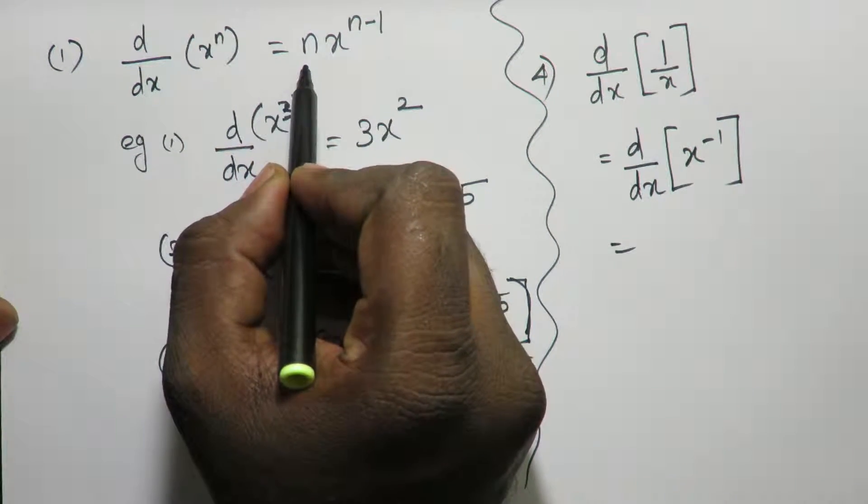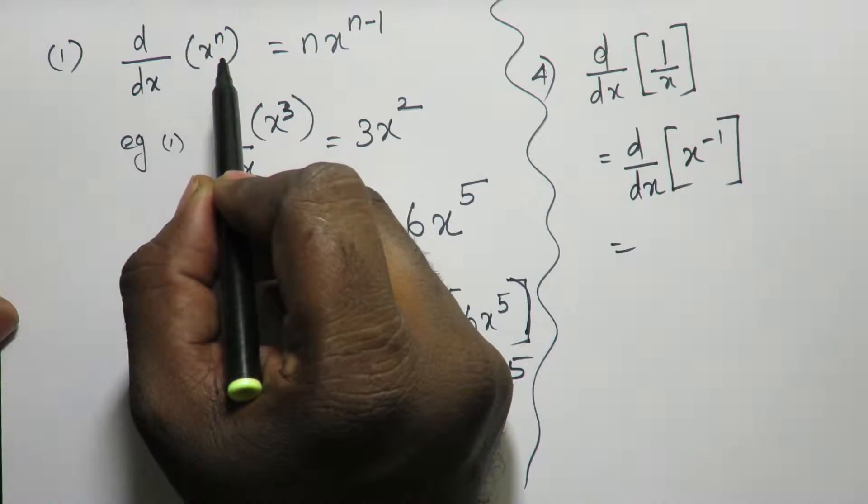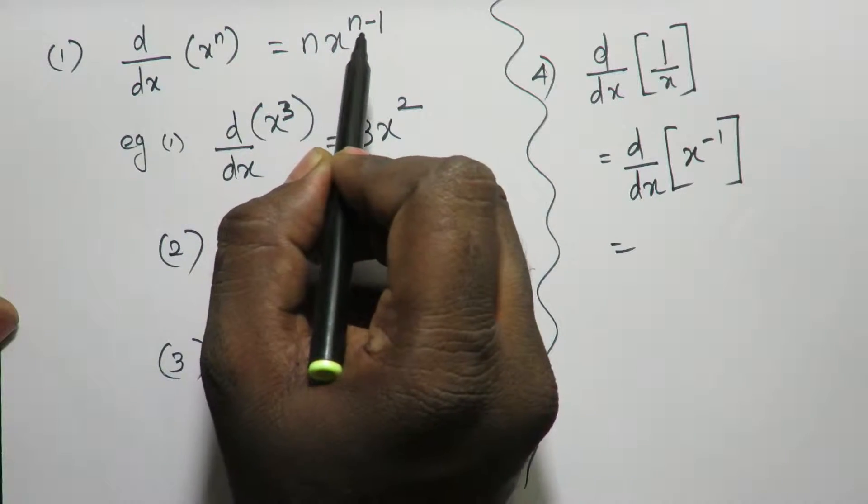what is the formula here? d by dx of x power n is n into x power n minus 1.